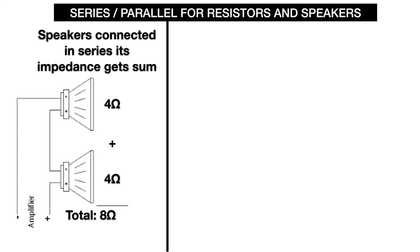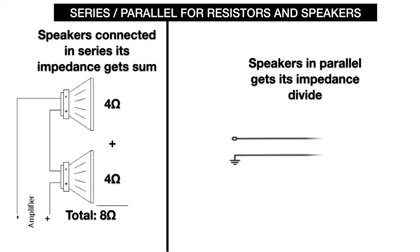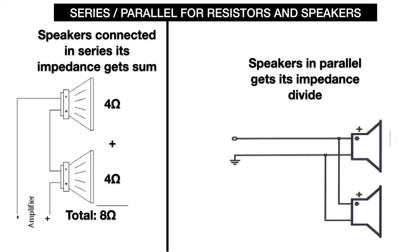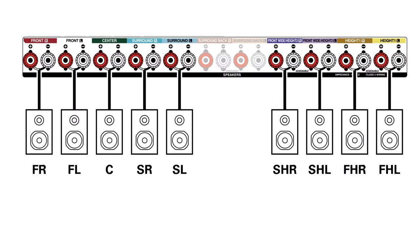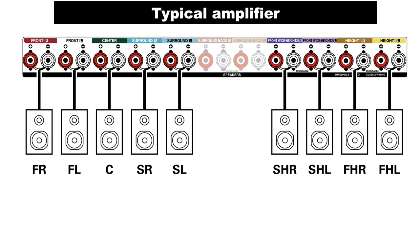If you connect speakers in parallel, you divide the impedance. For example, two 4-ohm speakers in parallel gives 2 ohms. So in a typical amplifier — whether home theater or concert — each output has a specific ohm requirement. You must match that impedance either by wiring speakers in series or parallel.